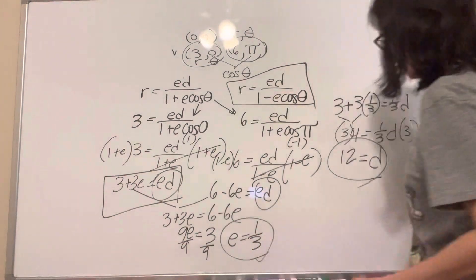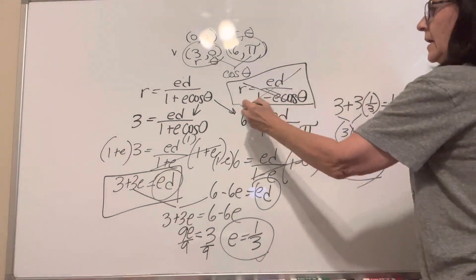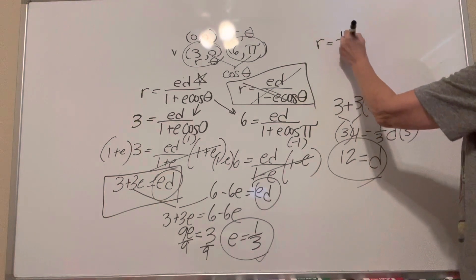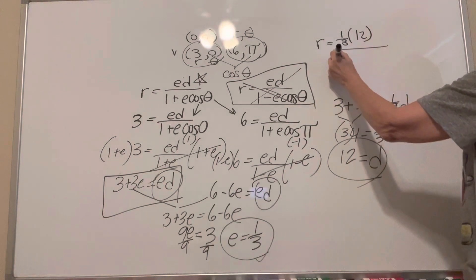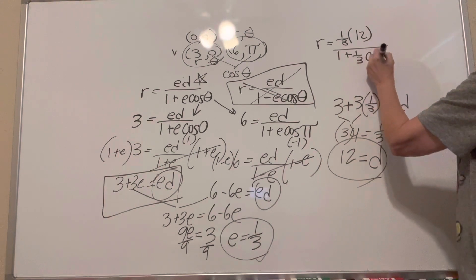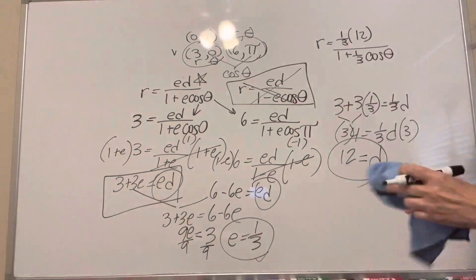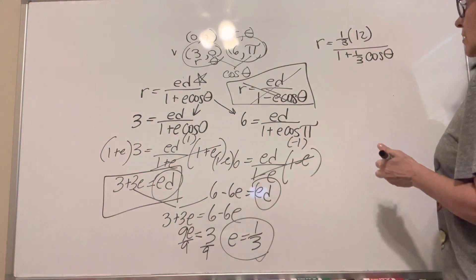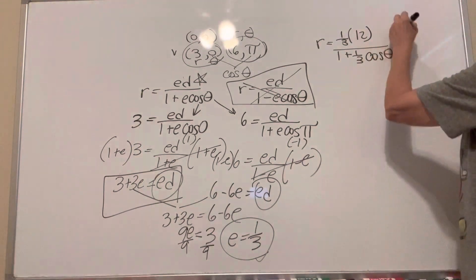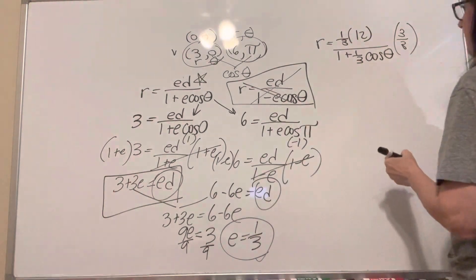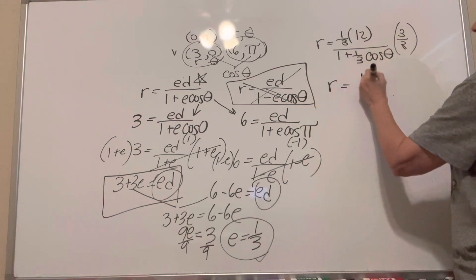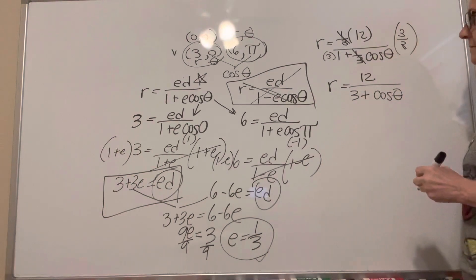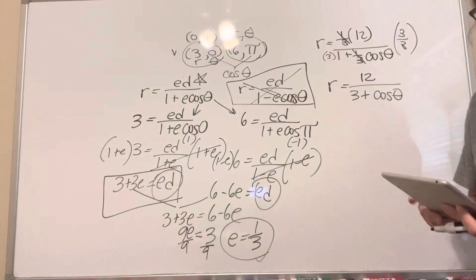I've solved for the eccentricity and the directrix. I can now plug it back into the equation. So we have r equals E times D — that's 1 third times 12 — over 1 plus 1 third cosine theta. We don't want fractions in our equations, so we multiply by 3 over 3 — that's like multiplying by 1 — to eliminate the fraction in the denominator. So r equals 4 over 3 plus cosine theta. That would be your final answer — that is the equation. Thank you.